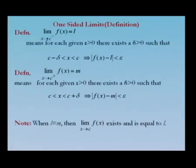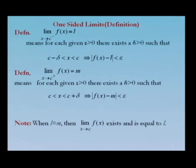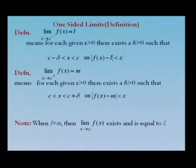Similarly we define the right-hand limit of f(x) at the point c. We denote it as limit x tends to c⁺ of f(x) = m. It means that for each ε > 0, there exists δ > 0 such that c < x < c + δ implies |f(x) − m| < ε. Now, if the left-hand limit and right-hand limit are both equal, then the limit x tends to c of f(x) exists and its common value is l.